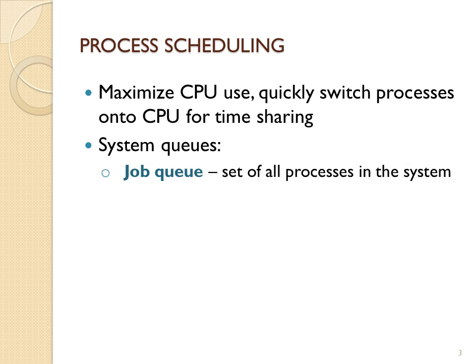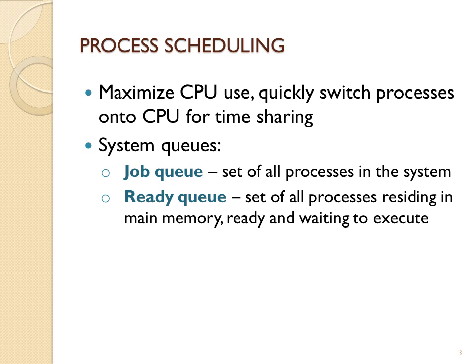In your system you have a bunch of different queues. There's the job queue, which is the set of all processes that are active in the system — all those that the operating system has PCBs on. Then you have the ready queue: these are all processes that are active and actually ready to go on the CPU.